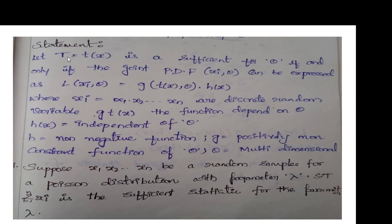Capital T is the sufficient statistic denoted based on the parameter theta. We can find the sufficient statistic by first considering the PDF — that means we can find the discrete or continuous distribution, whether it is a density function or probability mass function. We then convert that PDF or PMF to the likelihood function, and the likelihood function should be in the format G of T of X, theta into H of X.